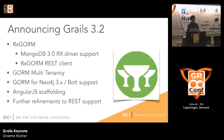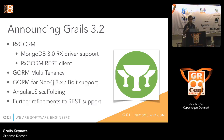We're also working on GORM for Neo4j 3, working together with a client who is using that in production. It's a great way to develop features for GORM because we know the feature is being used in a real-world scenario. GORM for Neo4j 3 will support the new binary protocol for Neo4j called Bolt. We're also announcing AngularJS scaffolding support and continuing to refine the REST support.